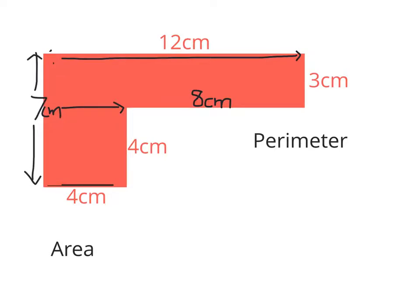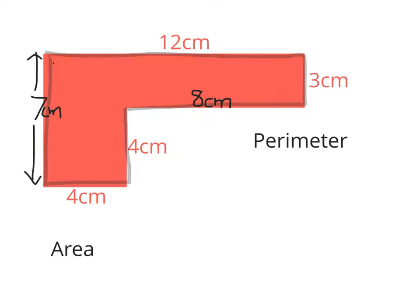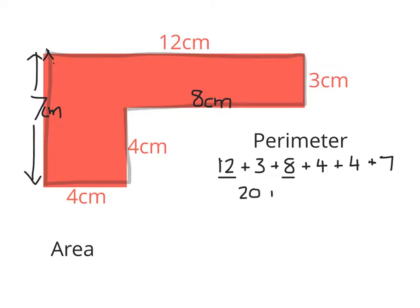Let's work out the perimeter. We have to add up all of the sides. Counting them, we've got 6 sides, so we need 6 numbers: 12 plus 3 plus 8 plus 4 plus 7 plus 4, working all the way around the shape. 12 plus 8 gives 20, 4 plus 4 is 8, and 7 plus 3 is 11. Adding those: 20 plus 11 is 31, plus 8 is 39, so the perimeter is 39 centimeters.